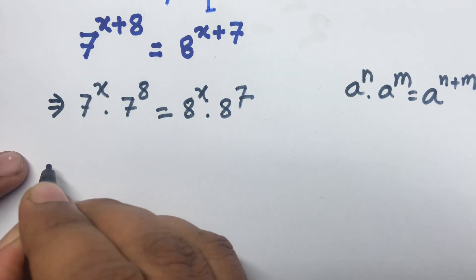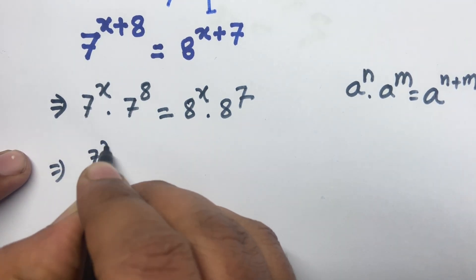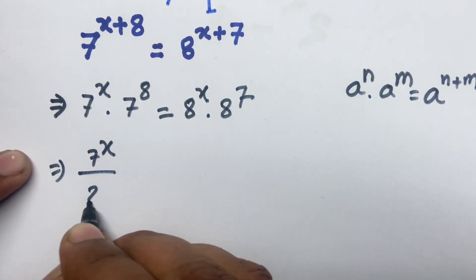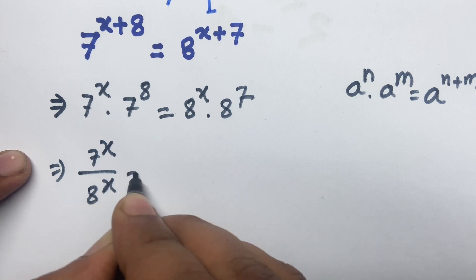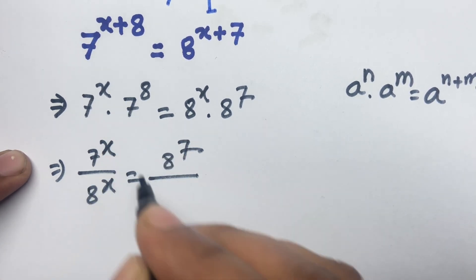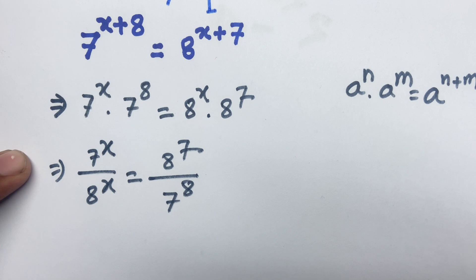Now I can rearrange to get 7 to the power x over 8 to the power x, equal to 8 to the power 7 over 7 to the power 8.